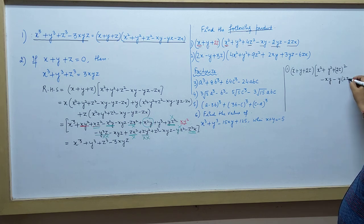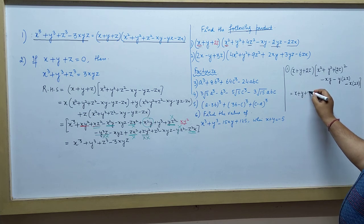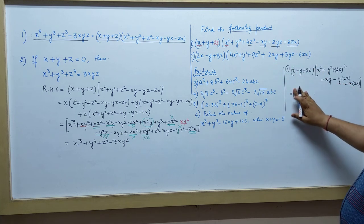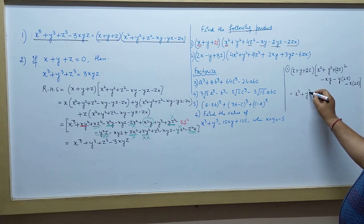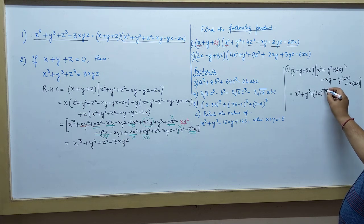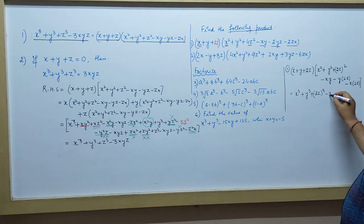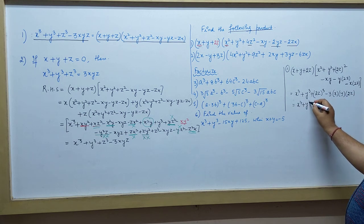Simplify करेंगे: x + y + 2z into — right hand side लिख रहा हूँ — पहली term का square + (2z)² minus ab, minus bc, minus ca. Simplify करेंगे तो यही बनेगा जो ऊपर statements है। तो आप इसको लिख सकते हैं: x³ + y³ + (2z)³ (left hand side), minus 3·x·y·2z. तो product करके इसका answer यह आ जाएगा — यह first question है।